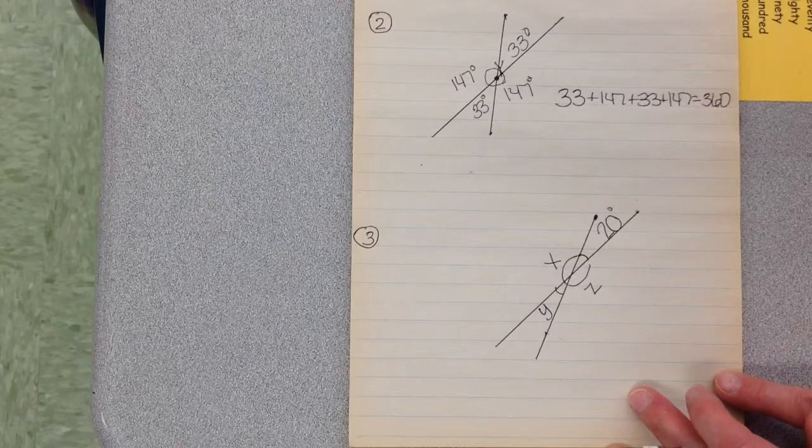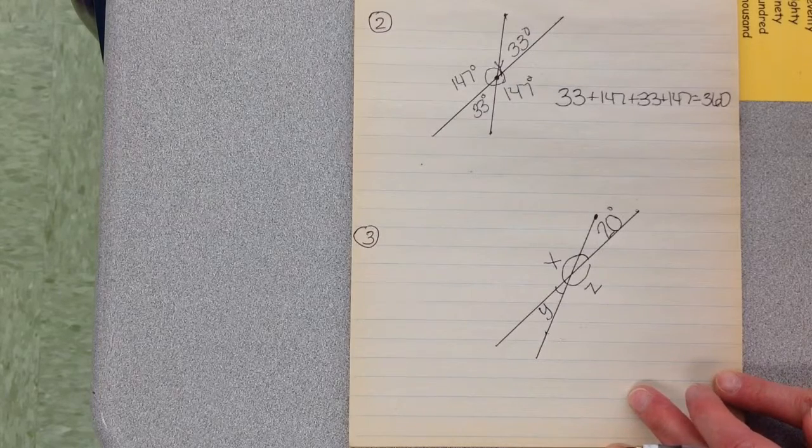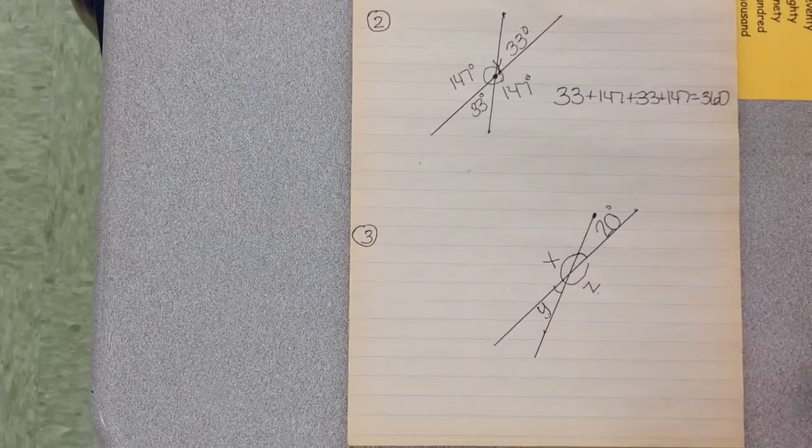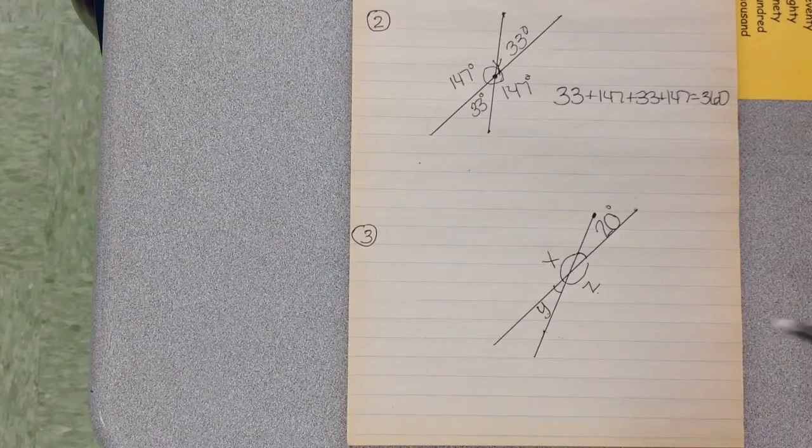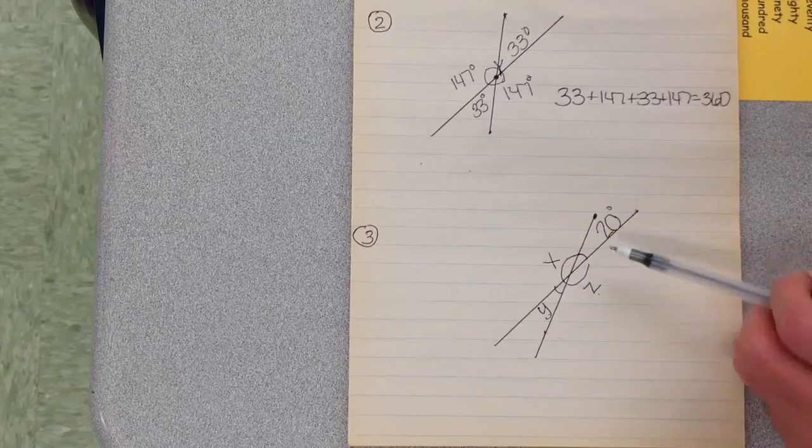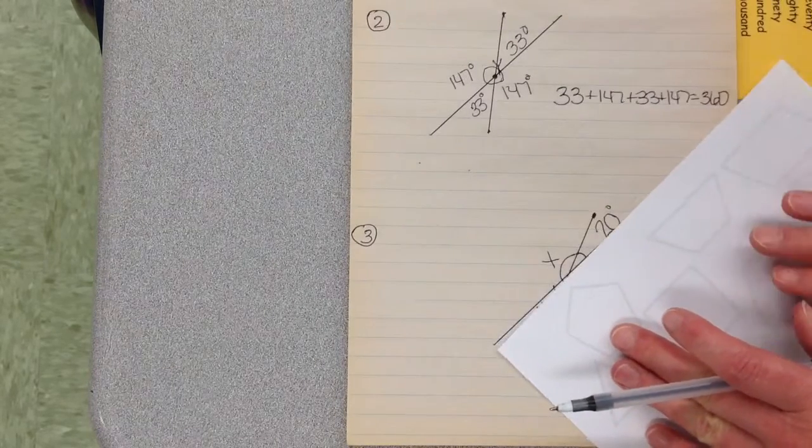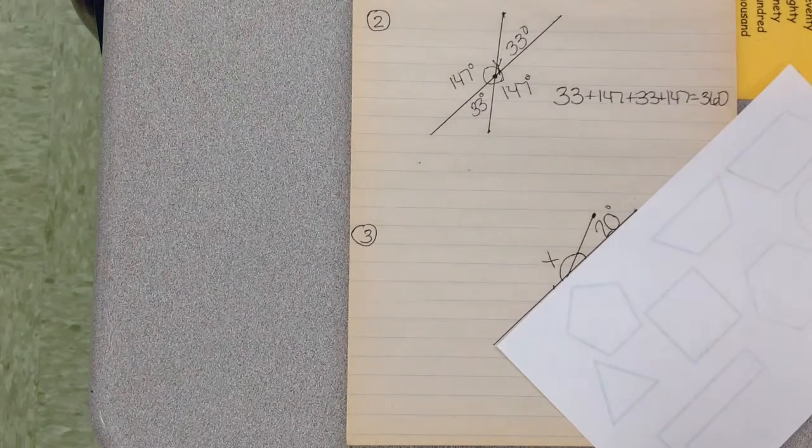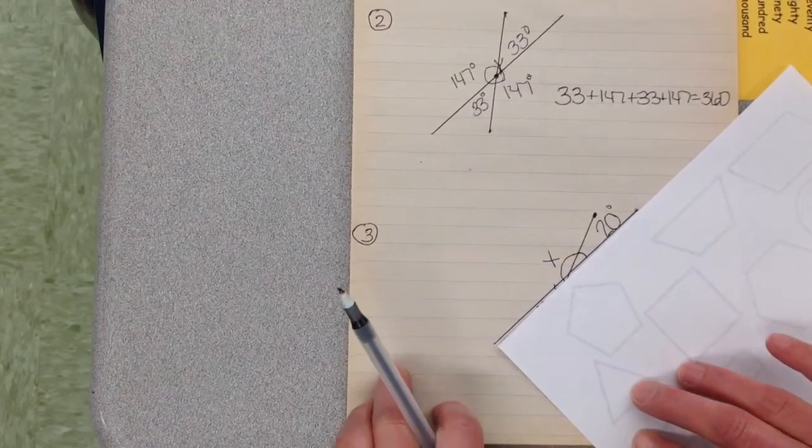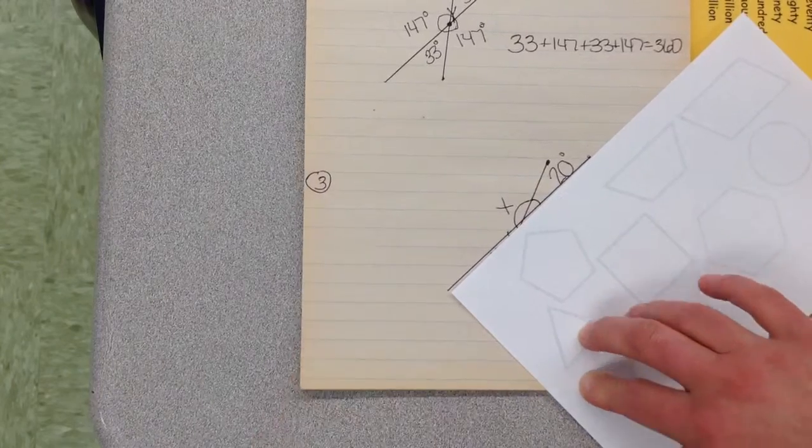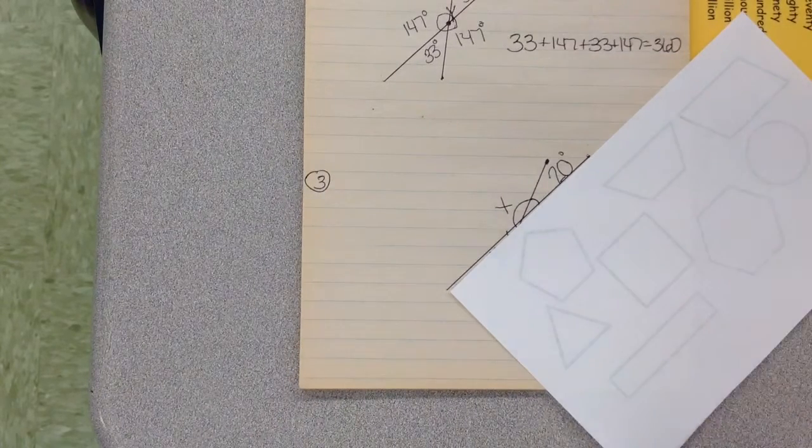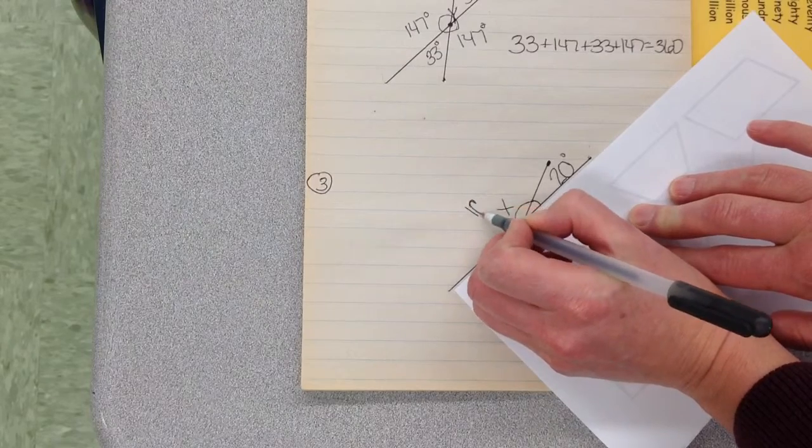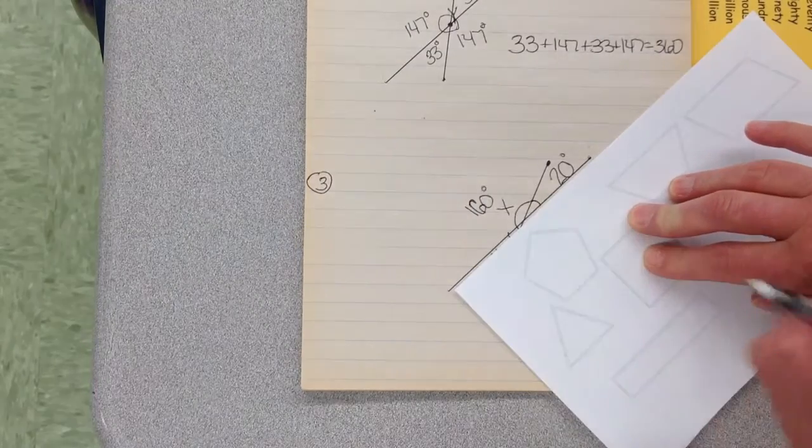We have some intersecting lines and we have the measurement of one angle. We have to find the other three angles. What I would suggest is you have to work with the angle that you know. I'm going to cover this up and if you notice, I have a straight line. I know there are 180 degrees in a straight line. So if I took 180 minus 20 I get 160. So this angle is 160.